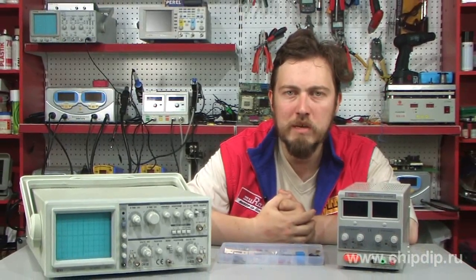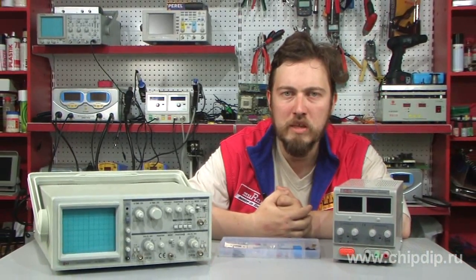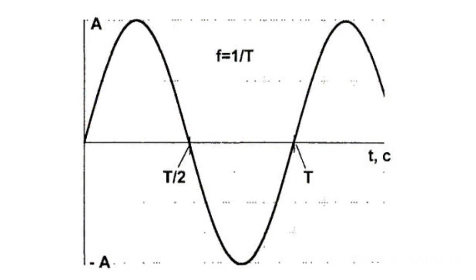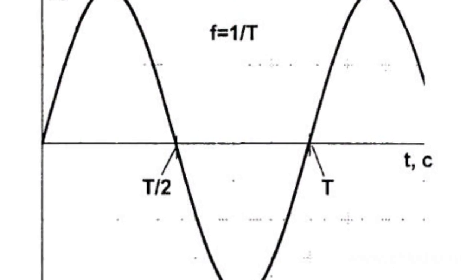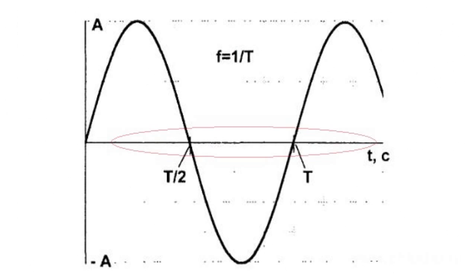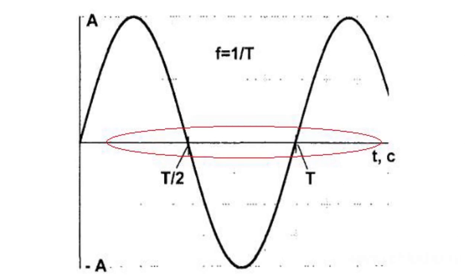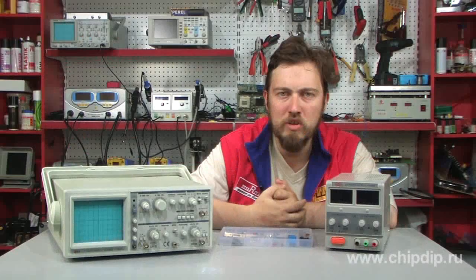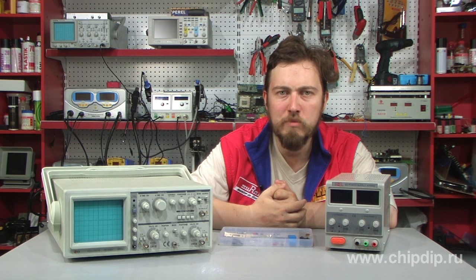It should be noted that the term 'average value' does have a right to exist. It's easy to see that the lower part of the sinusoid is strictly symmetric to the top — the upper and lower parts of the sine wave just cancel each other. Normally, it turns out that the average voltage or current is zero, which is not informative. Therefore, a different expression is often used.